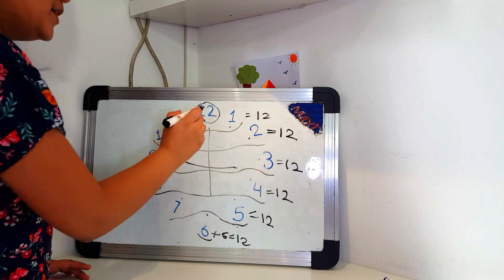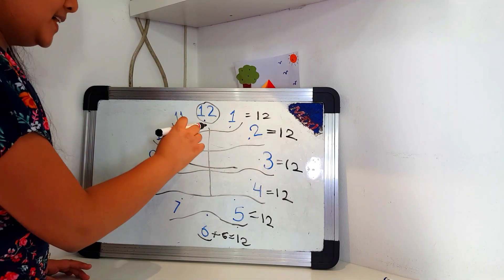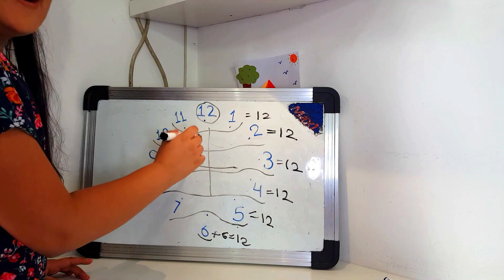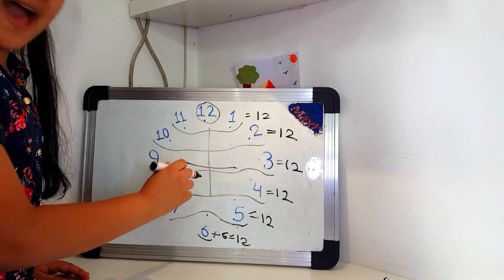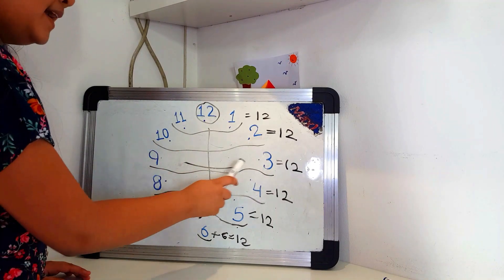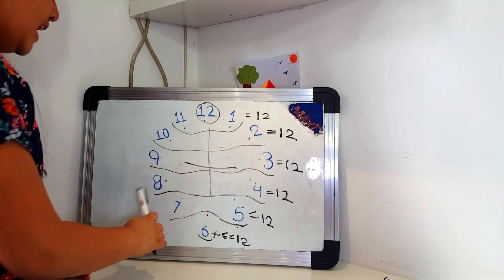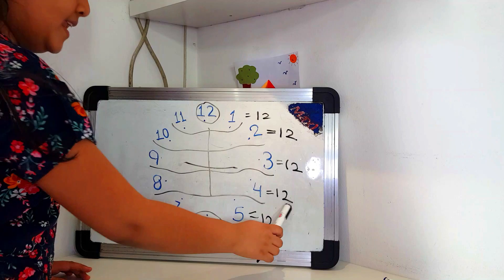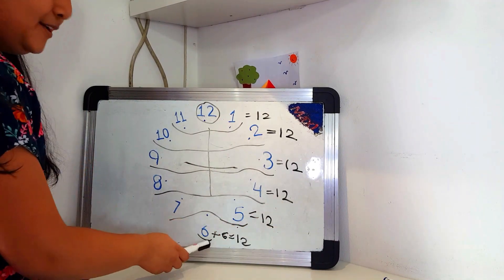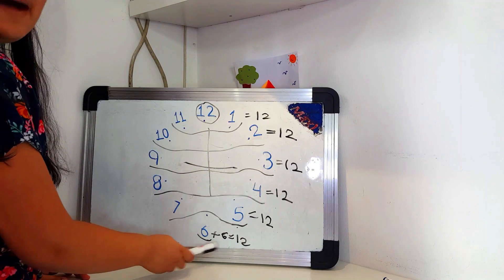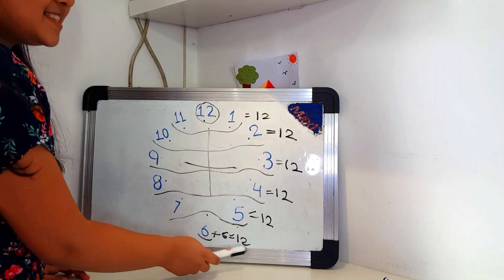So let's just do a recap. 12 is the largest number so I circled it. 11 plus 1 is 12. 10 plus 2 is also 12. And 9 plus 3? 12. 8 plus 4? 12. 7 plus 5? 12. And what did we do of 6? We doubled it and we got it as 12.